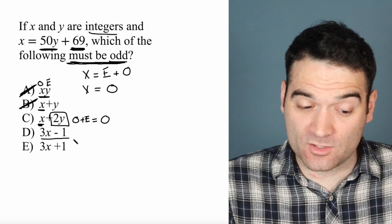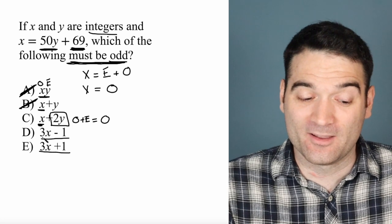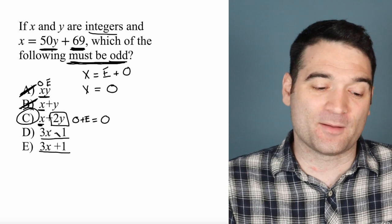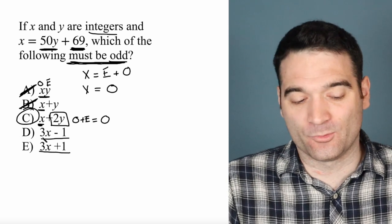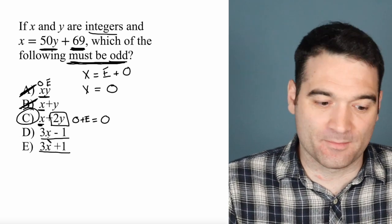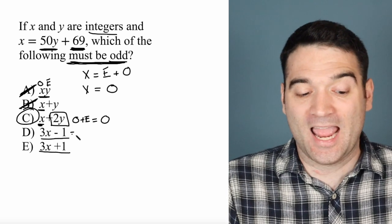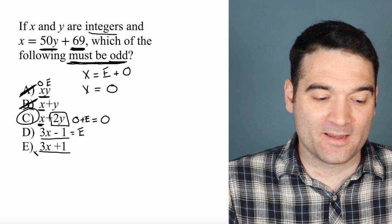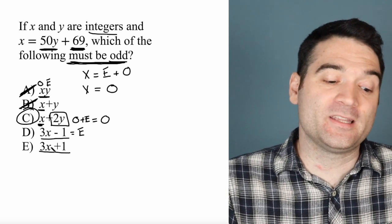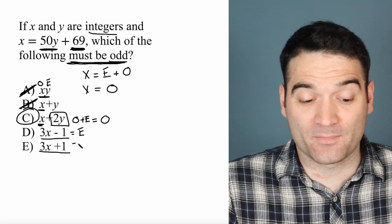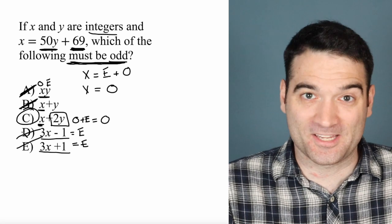And if you want to, you can just confirm these last two by double checking. But this is the only answer option that has to be odd. We'll do it real quick. 3 times an odd number has to be odd, because 3 is odd. Odd times odd. Minus an odd number has to be an even. And same deal here. 3 times an odd number plus an odd number has to be an even. So the correct answer here is C.